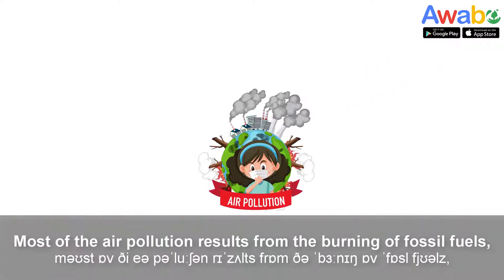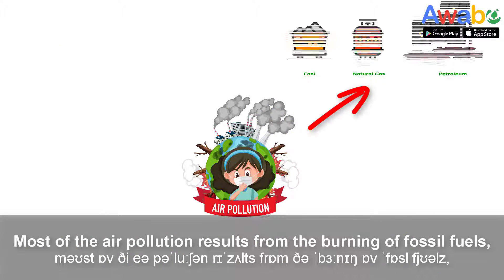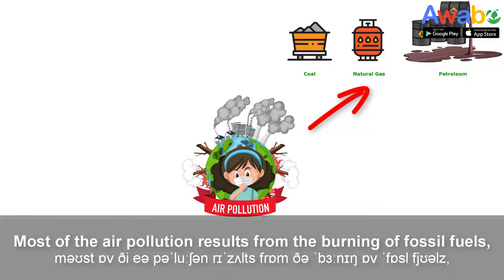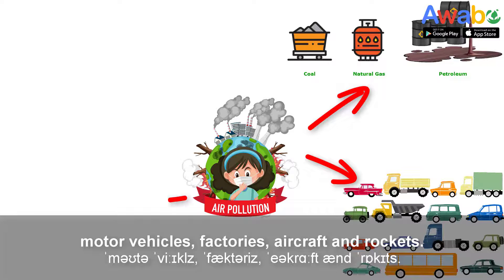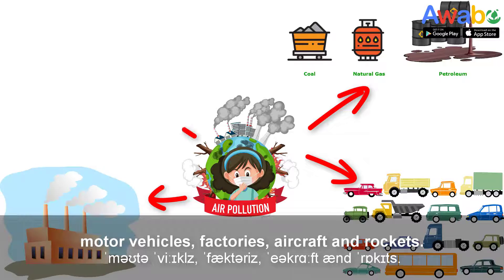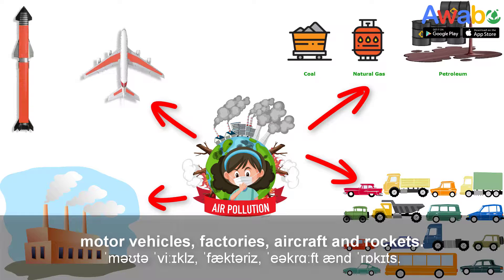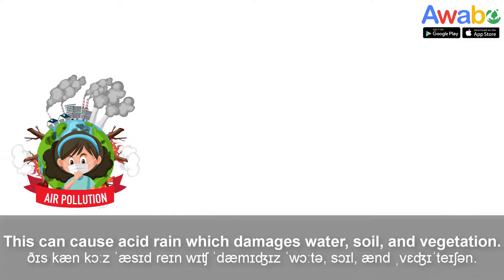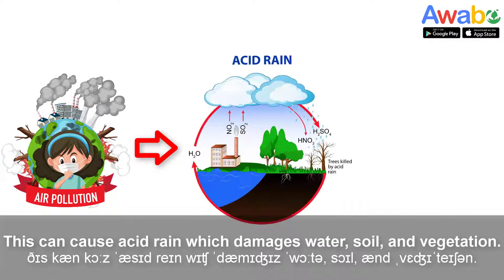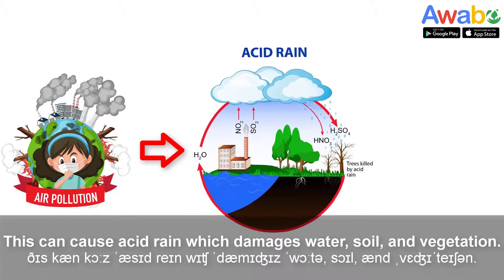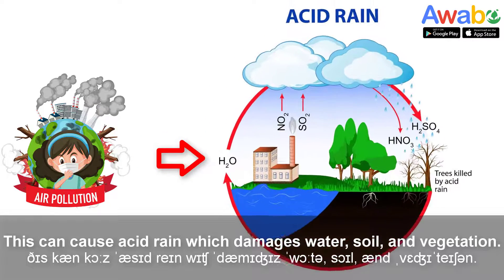Most of the air pollution results from the burning of fossil fuels, motor vehicles, factories, aircraft, and rockets. This can cause acid rain, which damages water, soil, and vegetation.